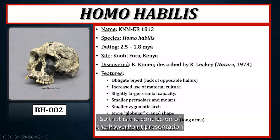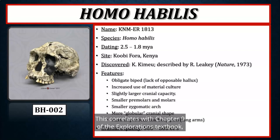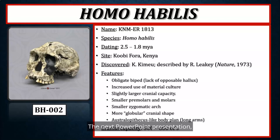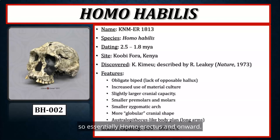That is the conclusion of the PowerPoint presentation on the Australopithecines and early members of genus Homo. This correlates with chapter 9 of the Explorations textbook, chapter 9 of the Essentials textbook, and chapter 15 of the Biological Anthropology Lab Manual. The next PowerPoint presentation will focus on later members of genus Homo — essentially Homo erectus and onward.